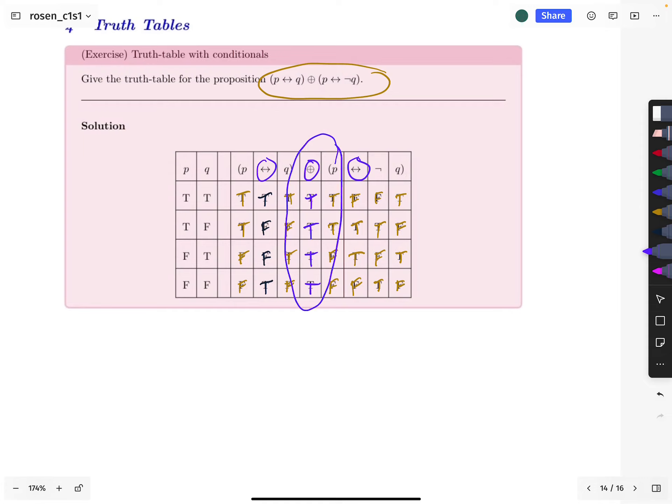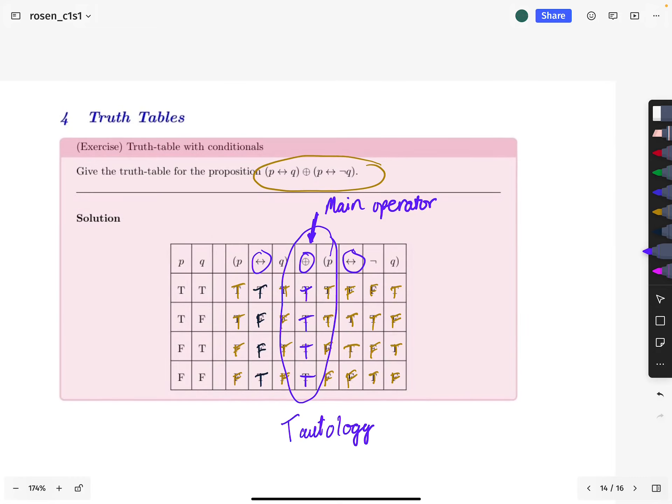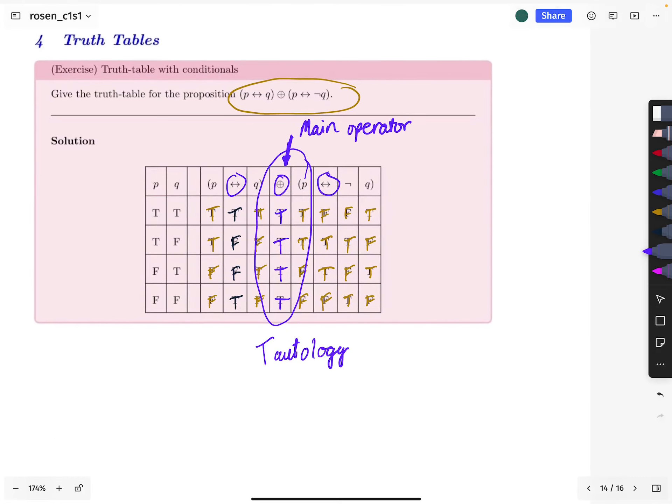And all of the values under the main operator, this is the main operator. And all the values under the main operator are true. When that is true, and I'm sure we'll talk about this in future sections, when all the truth values are true, we call that a tautology. Did I spell that right? Taut? Nope. Tautology. Oh geez. Okay. Yes. There. Good. Finally. Okay. I'm sure we'll talk about that more later, but since I was looking at it, then I wanted to just go ahead and remark on it.